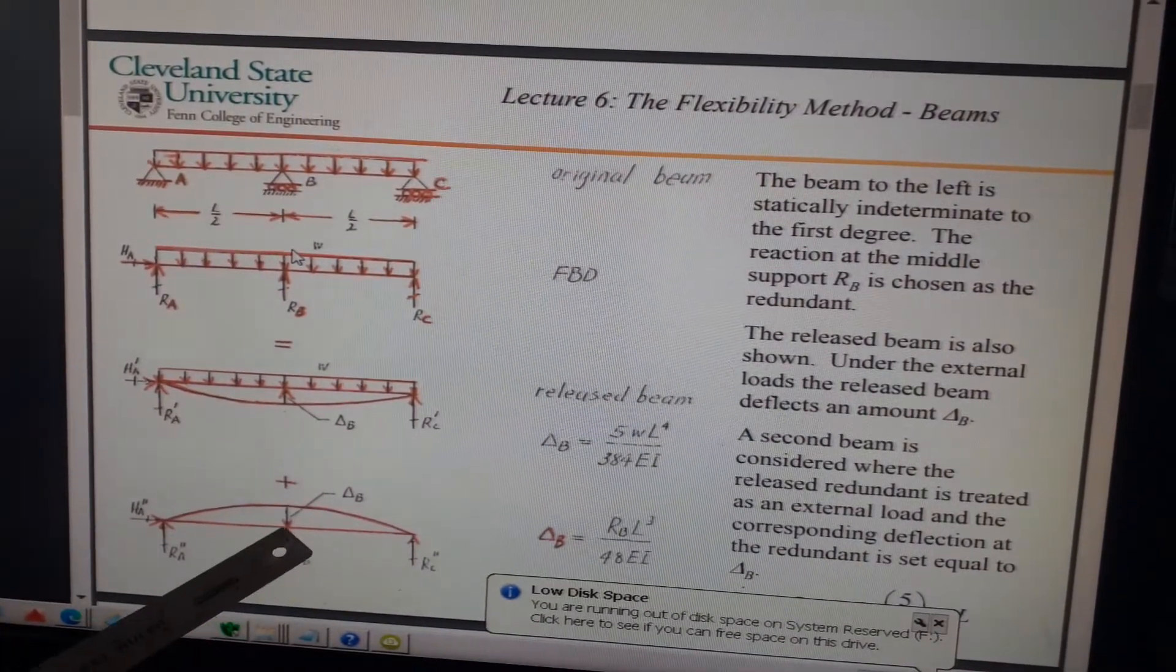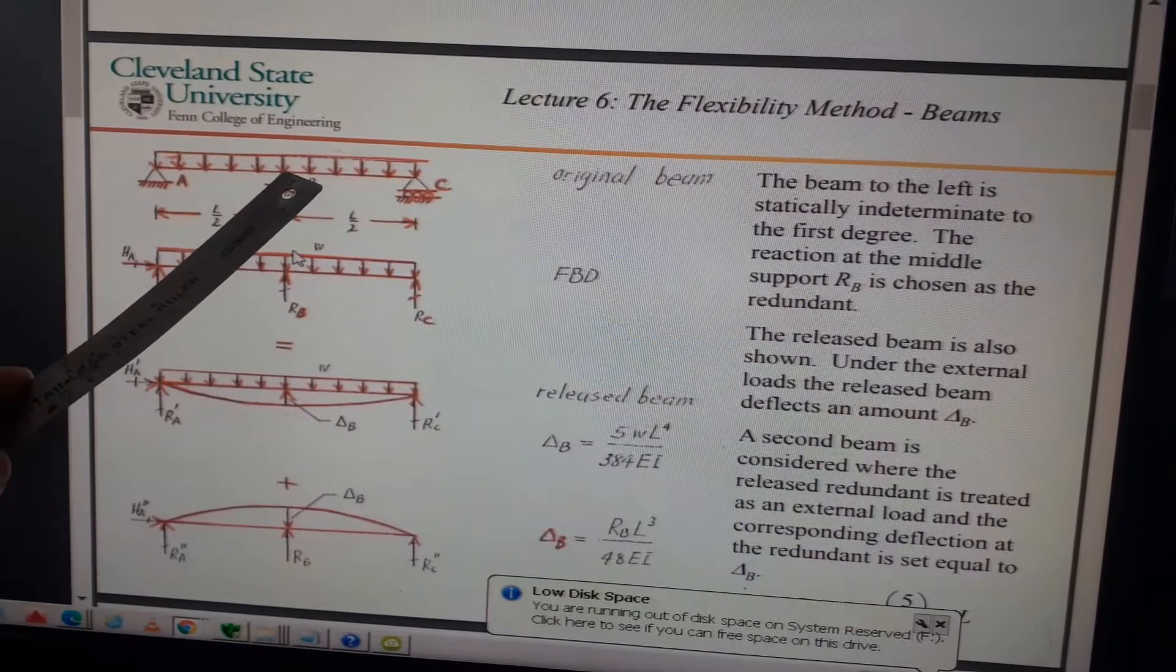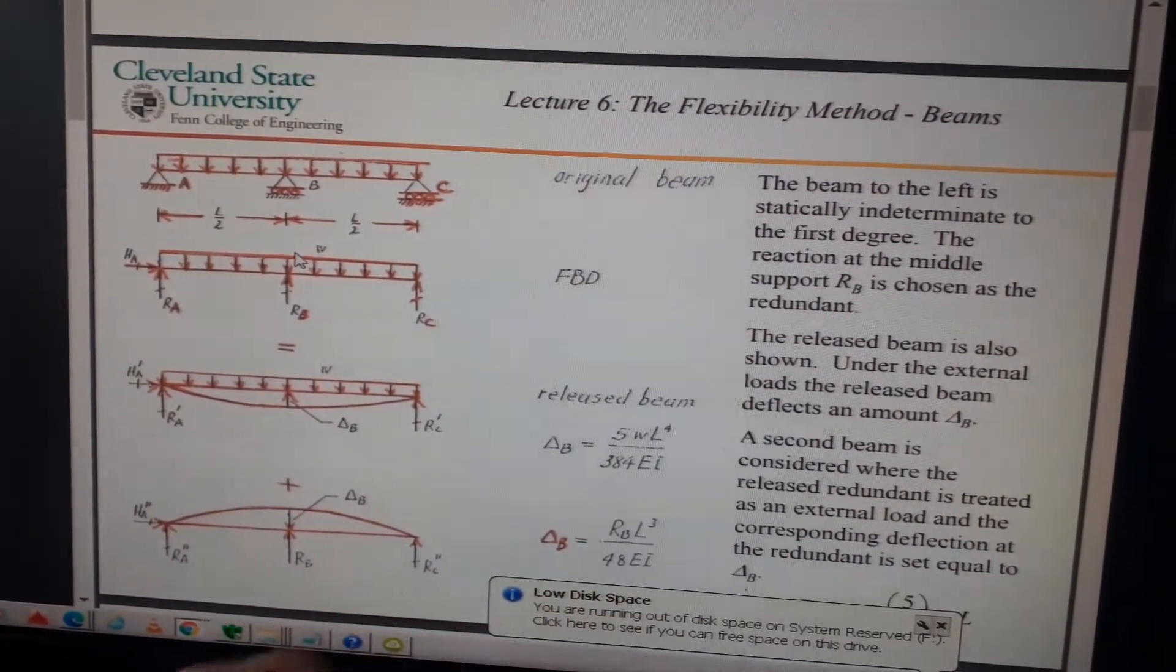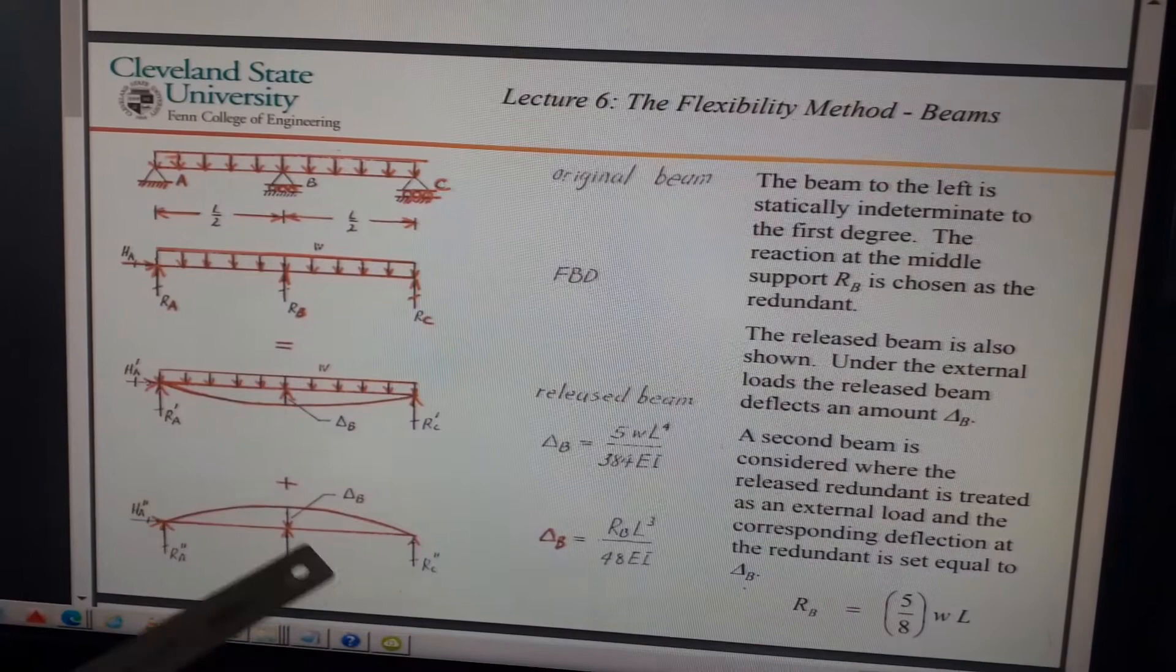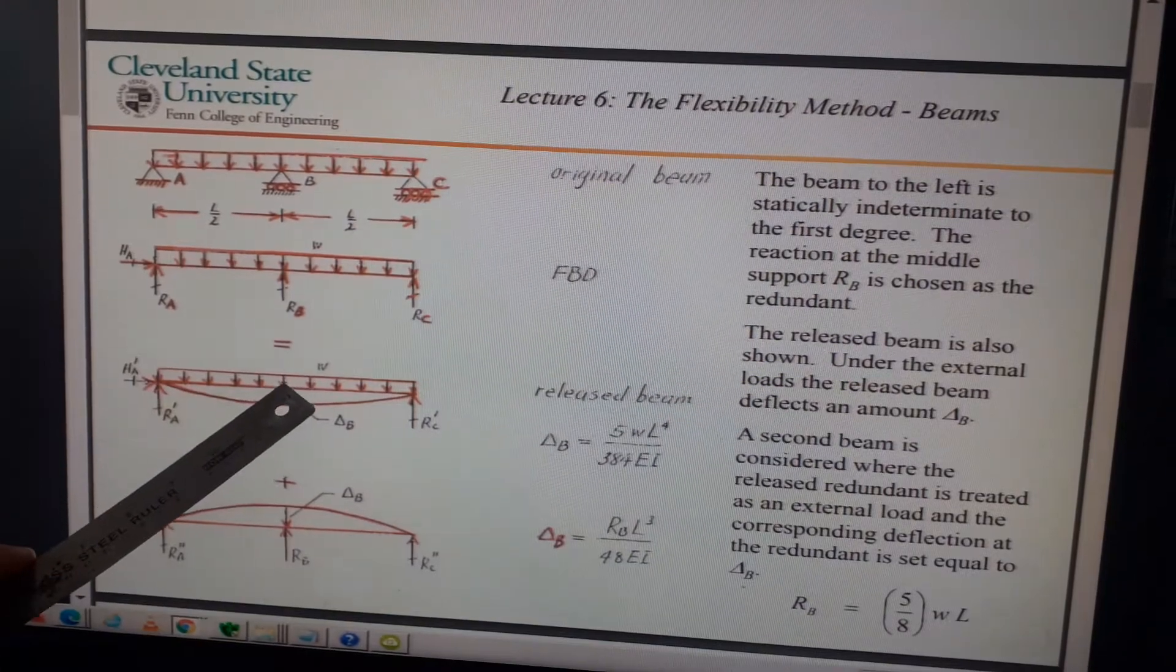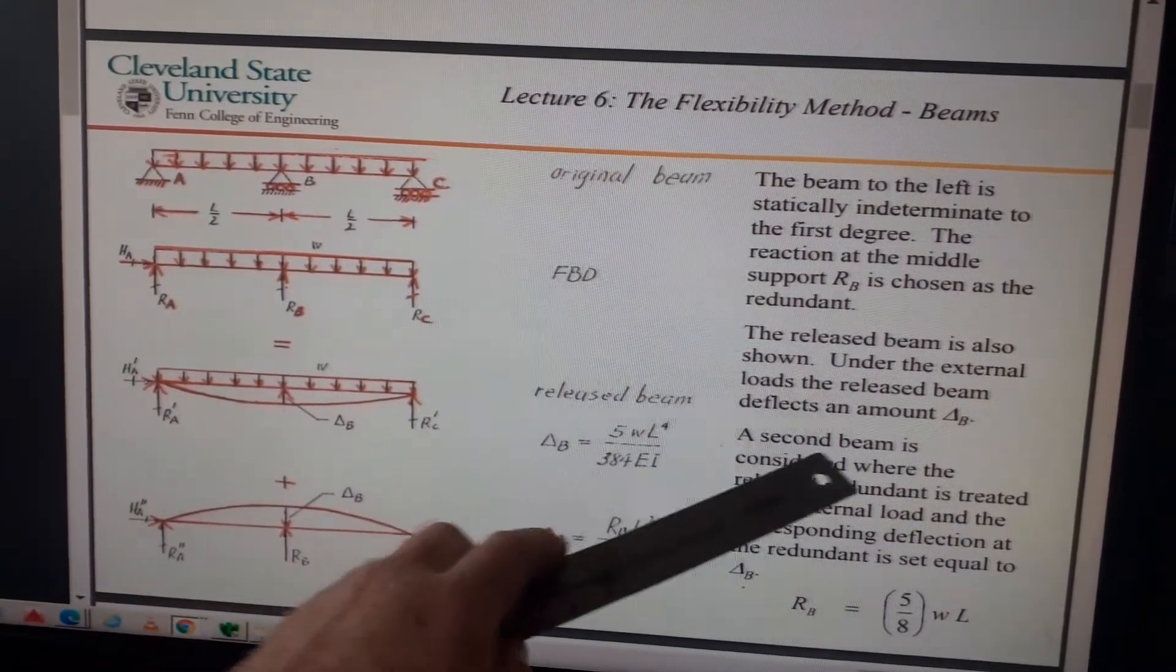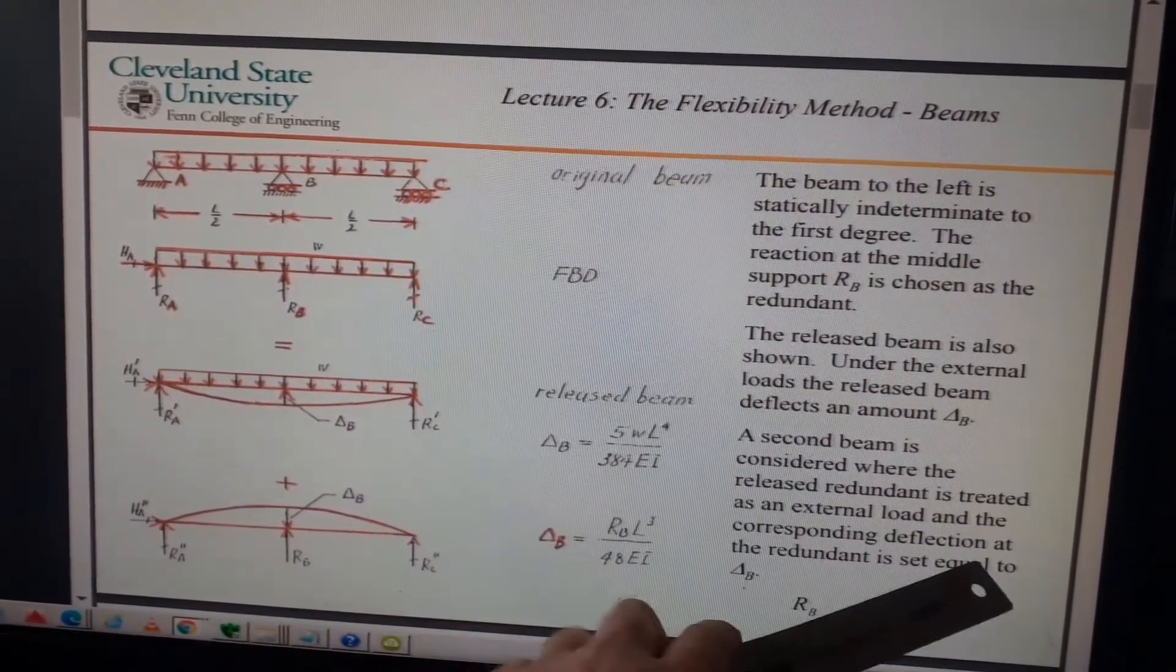So what force at RB - what value of force would we need if we apply a force upwards at B to restore that to zero? Because we know in this model that the deflection at B should be zero. It says a second beam is considered where the released redundant is treated as an external load, and the corresponding deflection at the redundancy is set equal to delta_B. So basically, we're trying to restore that position back to what it would be in the original beam, which is zero. So the beam deflects this much under the actual loads without the support; now apply force back where the support is.